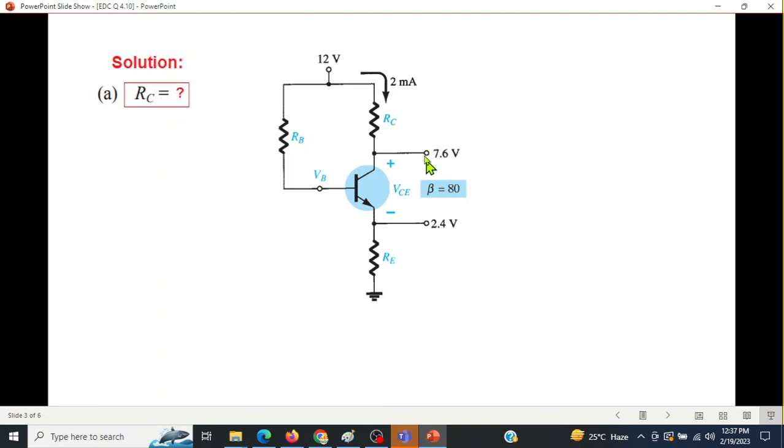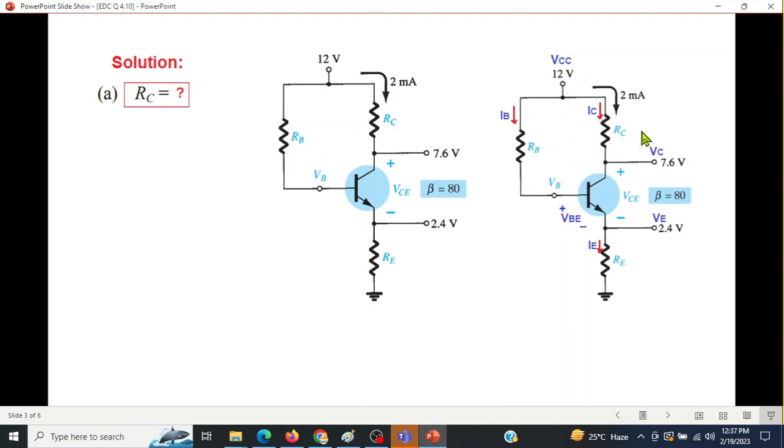For ease, I'll label these voltages. This voltage is called VCC, this is called VC, this is VE, this one is VBE, and the three currents: IC collector current, IB base current, and IE emitter current.